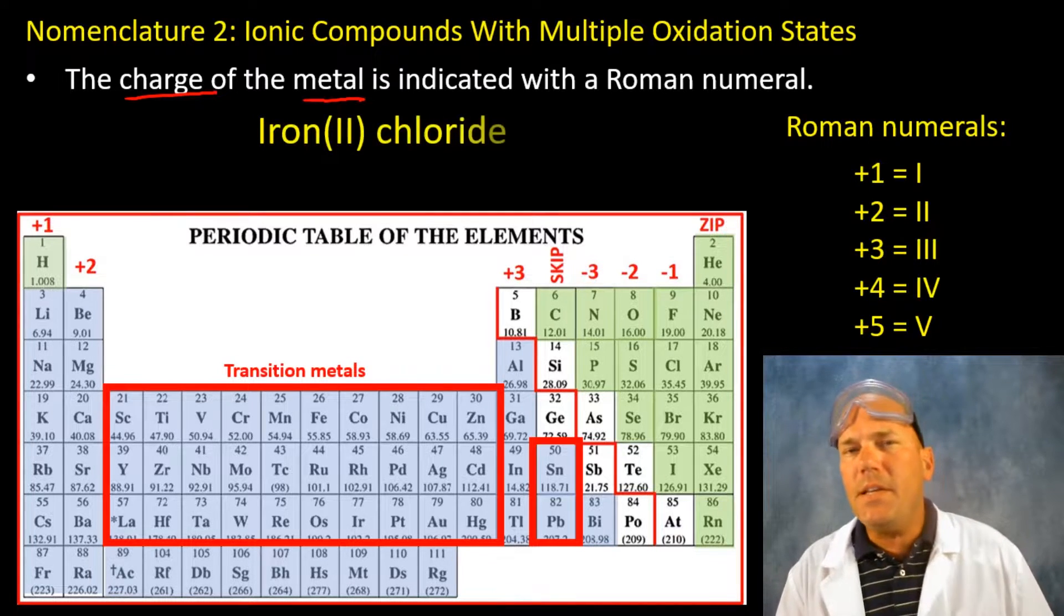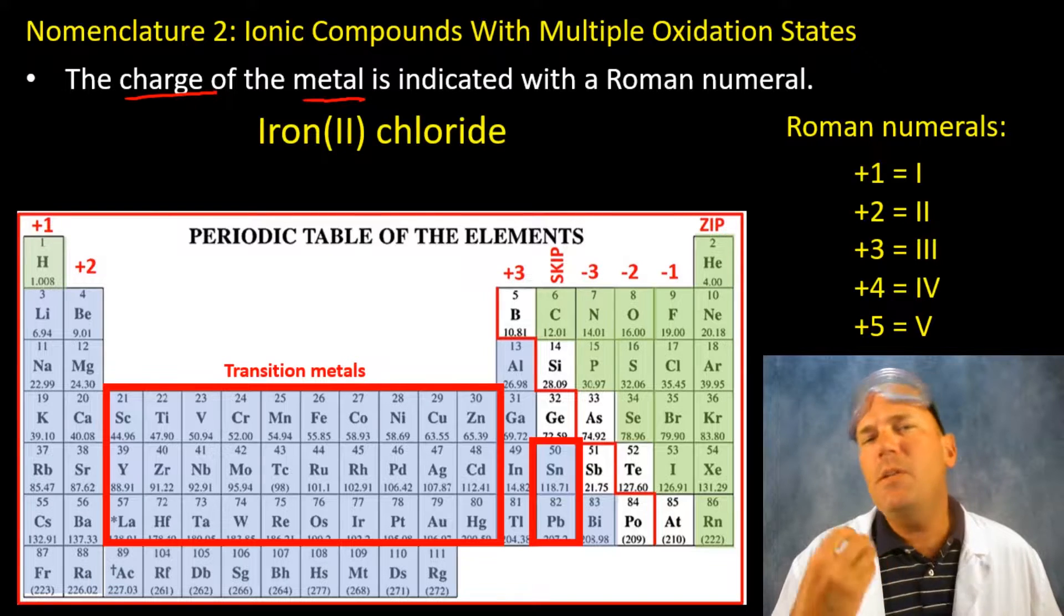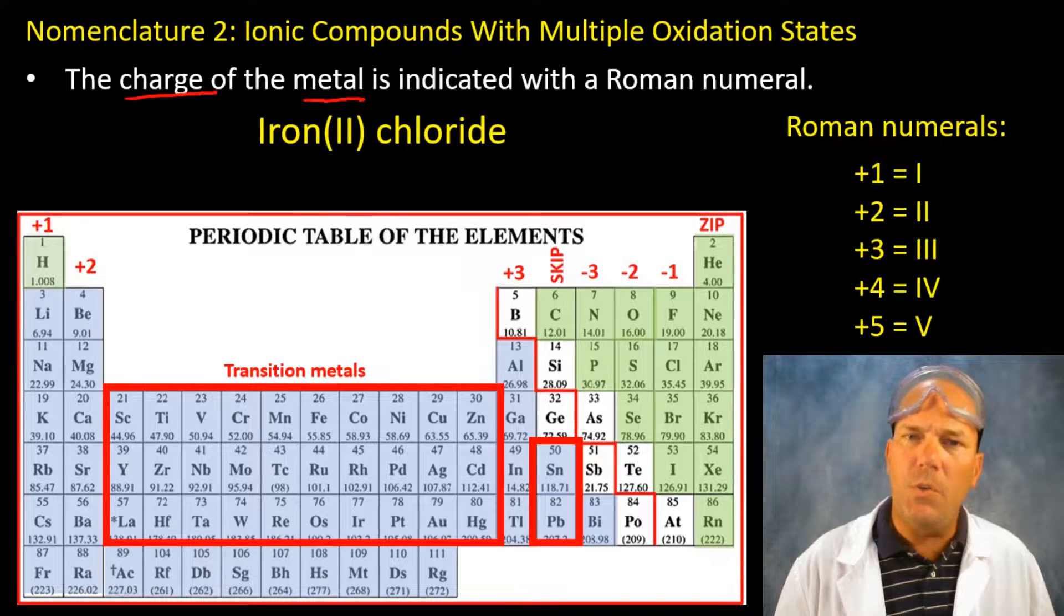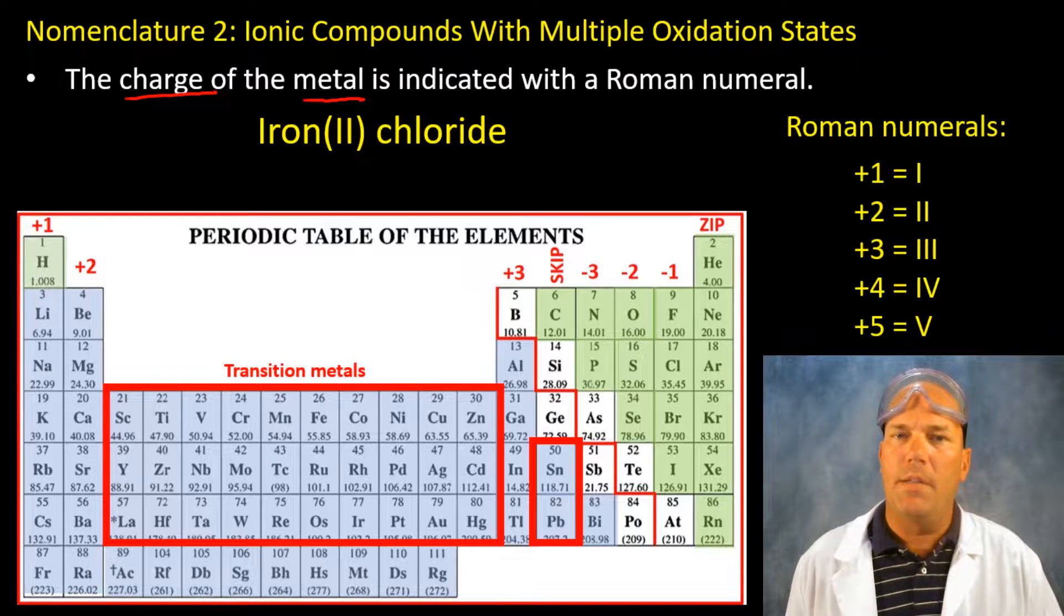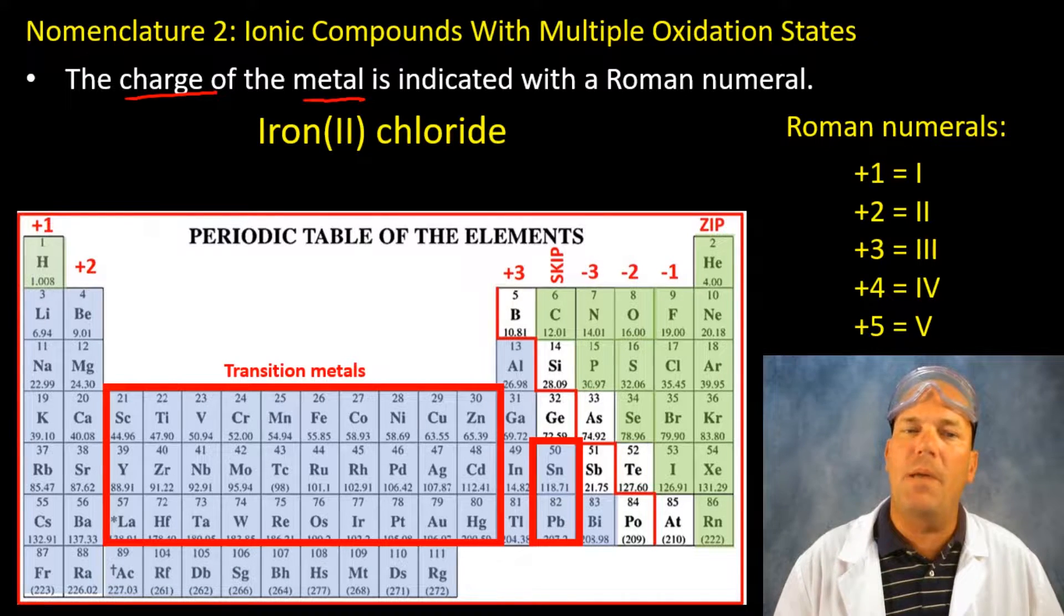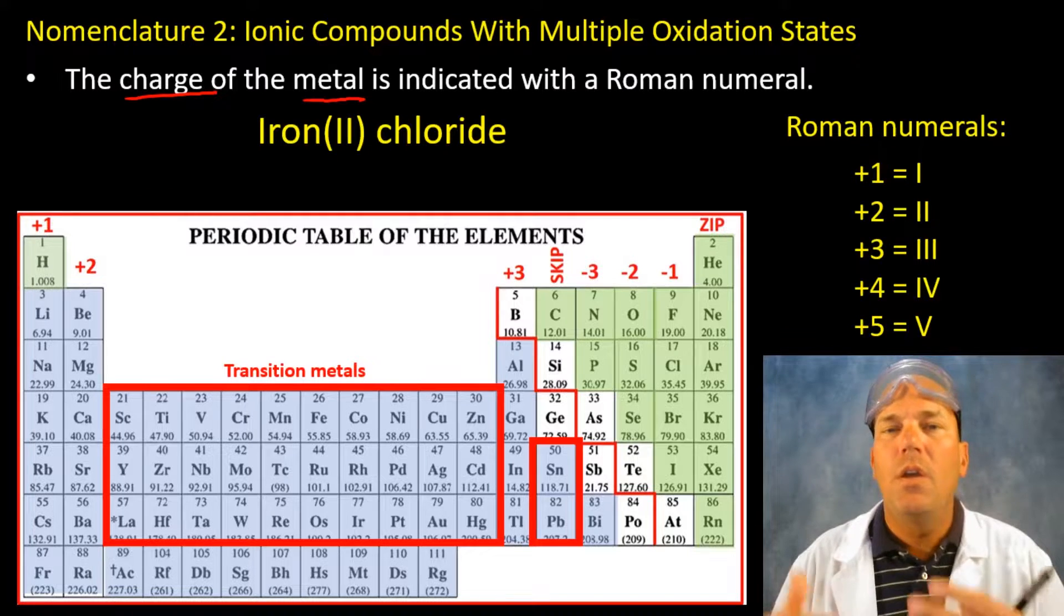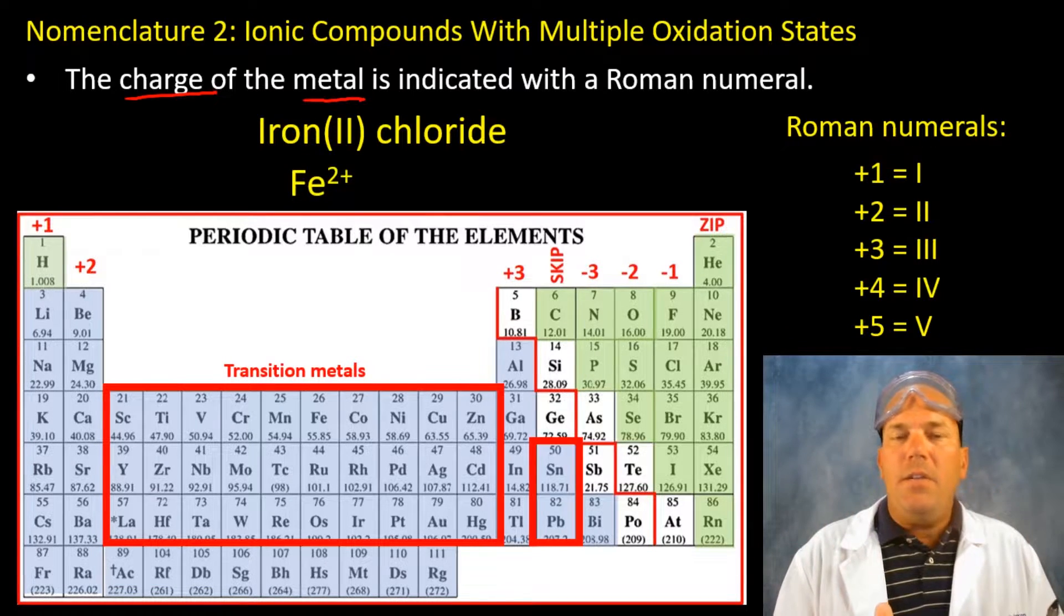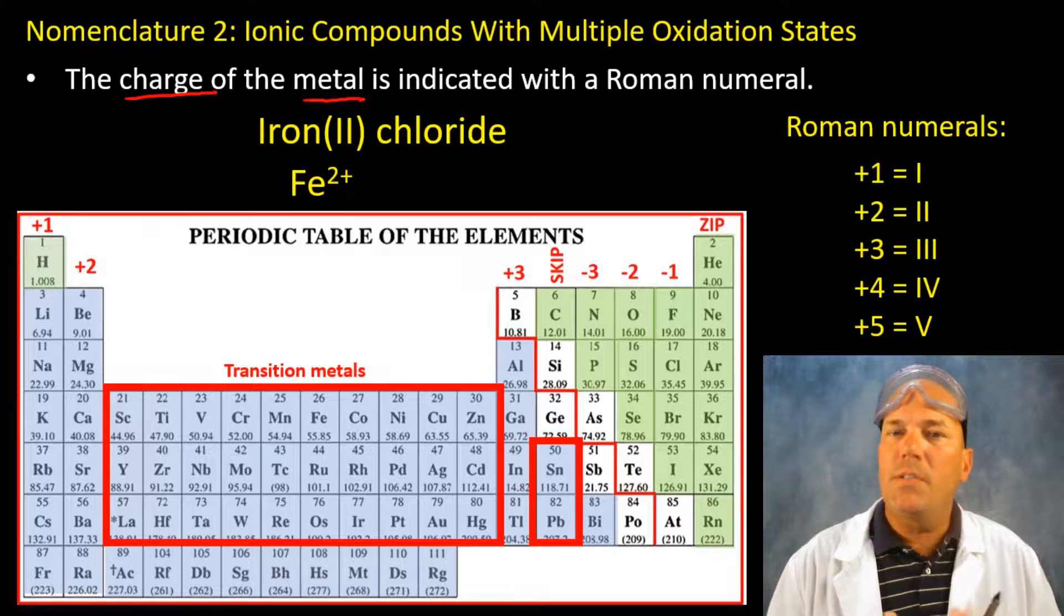Let's look at this one here. Now here is the way you would pronounce this: this is iron two chloride. That's how you pronounce this compound, iron two chloride. Now iron has a charge of plus two.